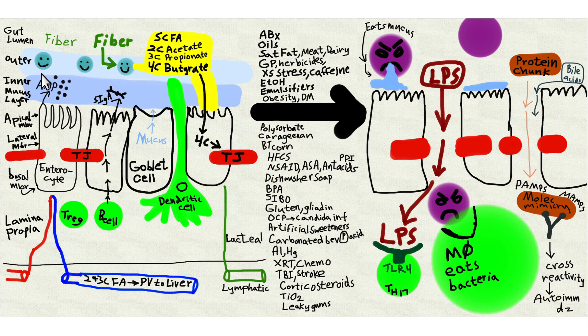Then there's an outer mucus layer. The smiling bacteria are the good gut bacteria — they are your friend, also called commensal bacteria. We have a symbiosis with them, a mutually beneficial relationship. The key thing to know about the good gut bacteria is they're fed by fiber. Fiber is the most common nutrient deficiency in Americans because they don't eat enough plants. All plant foods have fiber; animal foods have zero fiber.